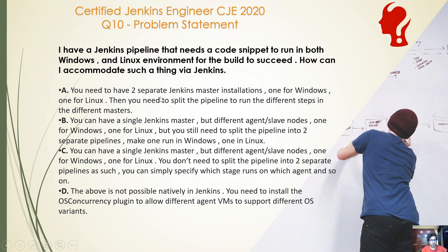Looking at the answer options: option A is also viable — I could have two separate Jenkins master installations — but I don't need it; I can just have two separate slave nodes. Option B says you need to split the pipeline into two separate pipelines, but as I showed, I can split my pipeline into two different stages rather than two completely separate pipelines. So the answer is C: a single Jenkins master with different agent or slave nodes, one for Windows and one for Linux, and you simply specify which stage runs on which agent.